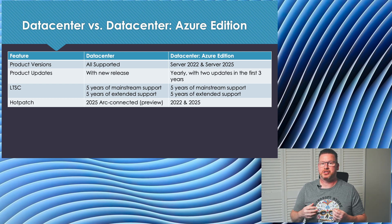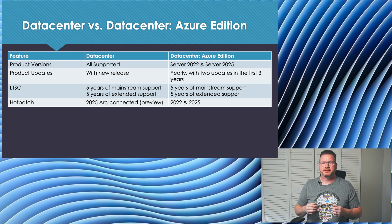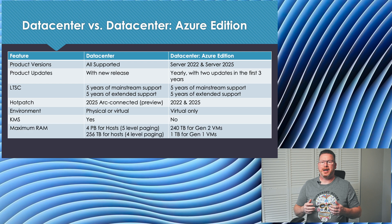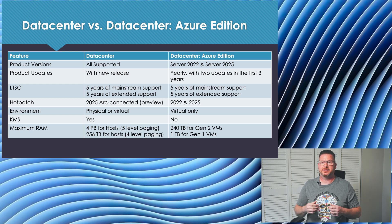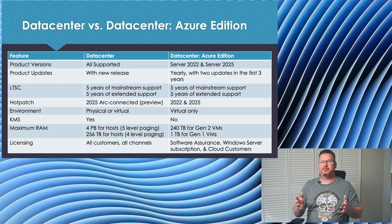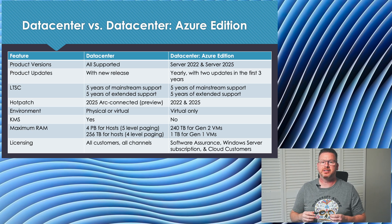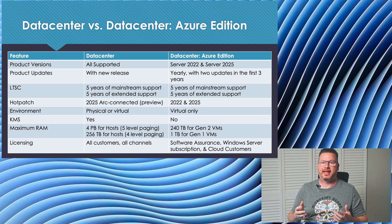Azure Edition supports hot patching with Server 2022 and 2025. Datacenter can be installed on physical or virtual servers. Azure Edition is virtual only, in Azure as you may assume. Datacenter can be activated with the Key Management Server, or KMS. Azure Edition is activated by Azure. The RAM supported is different between the two. Datacenter can go up to four petabytes if five-level paging is used, which extends the virtual memory addresses available to the processor. Azure Edition supports 240 terabytes on Gen2 VMs. Datacenter is available to all customers. Azure Edition is available to Software Assurance customers, customers with a Windows Server subscription, and cloud customers.